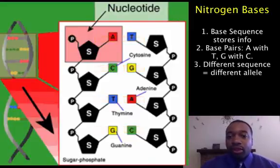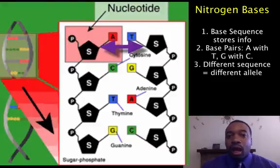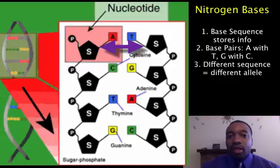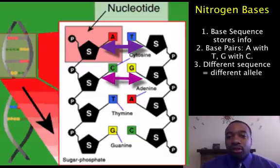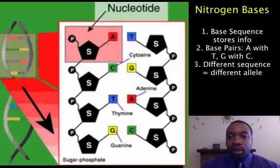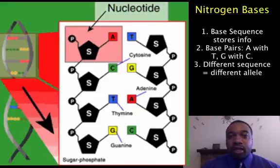We see that A is complementary to T, so A matches with T, while G matches with or is complementary to C. And the order of the bases is actually how the information is stored.